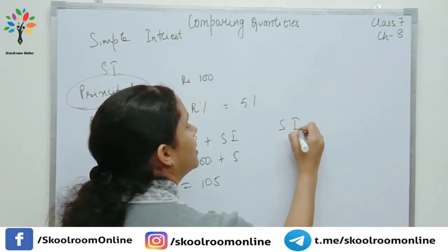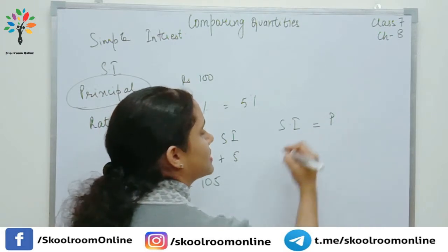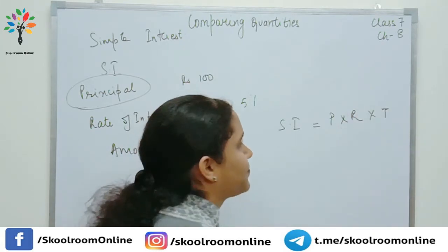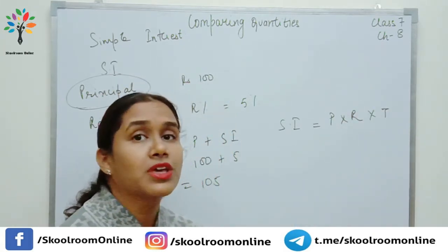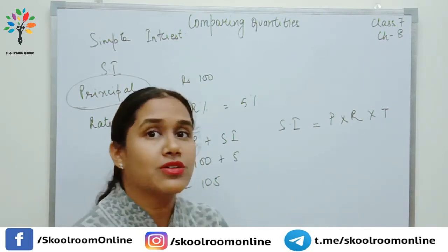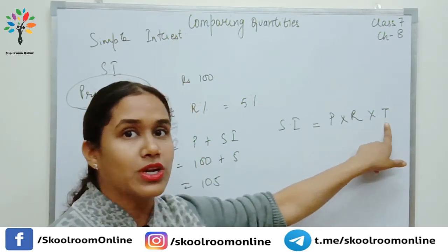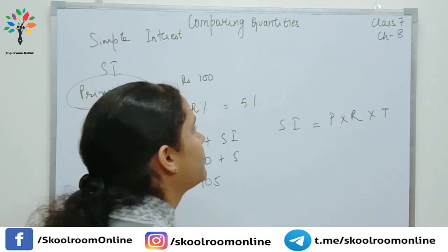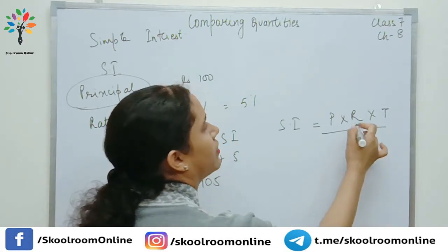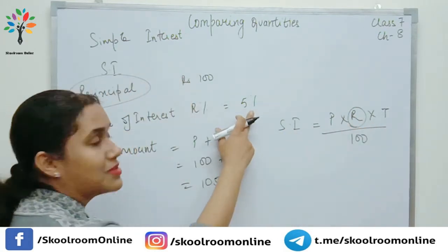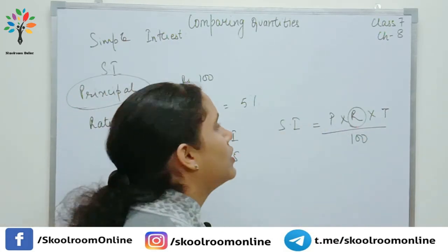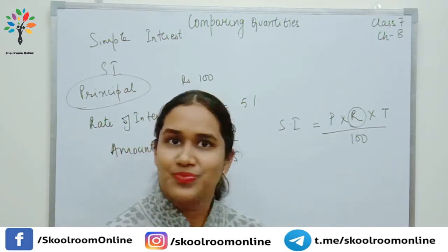Simple interest formula: SI = P × R × T / 100. यहाँ T (time) भी important है क्योंकि borrowing कभी-कभी 2, 3, 4, 5 years तक stretch होती है. Rate of interest percentage में है इसलिए 100 से divide करते हैं. Amount = Principal + Interest.